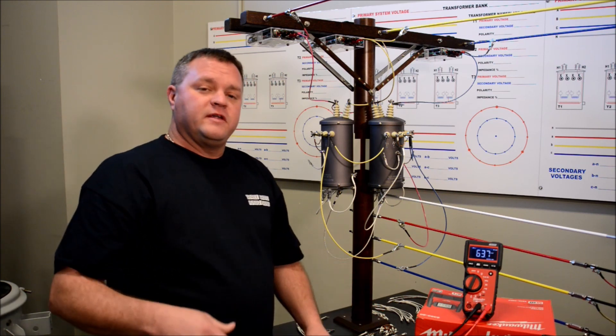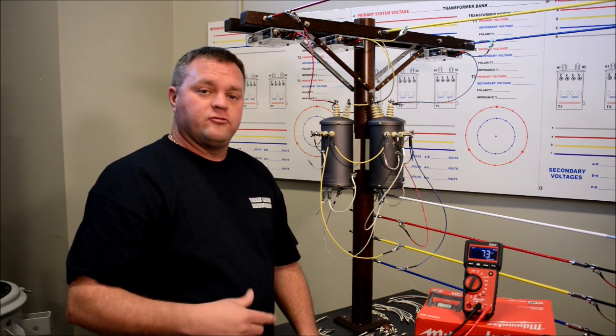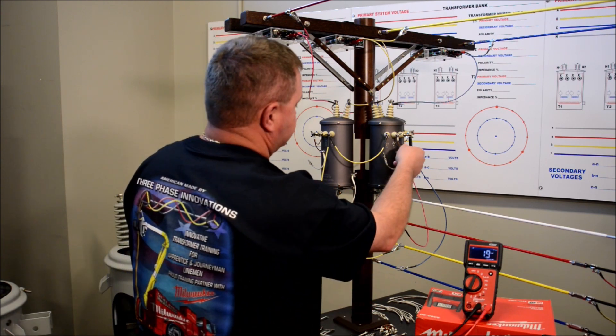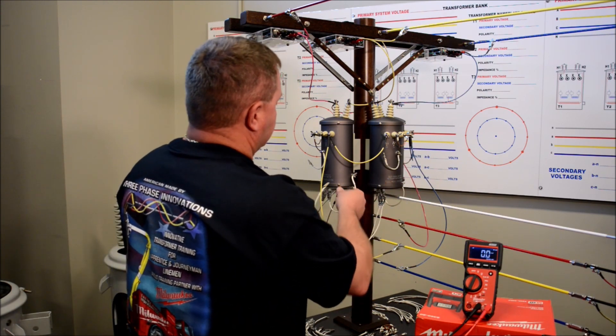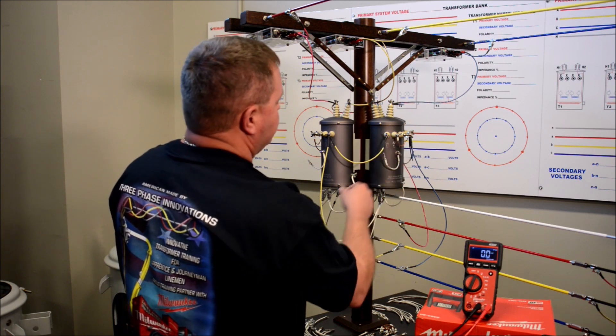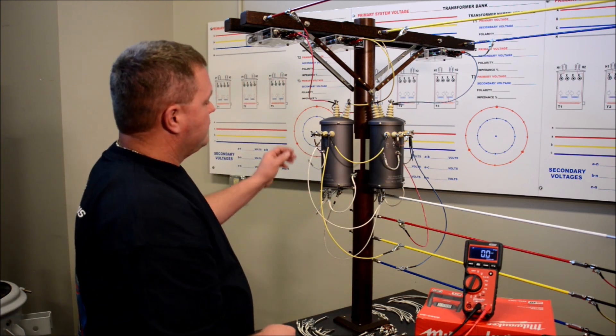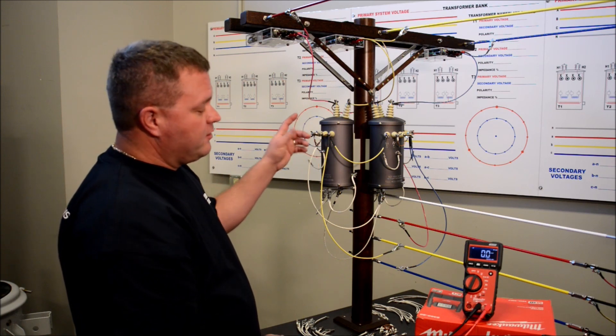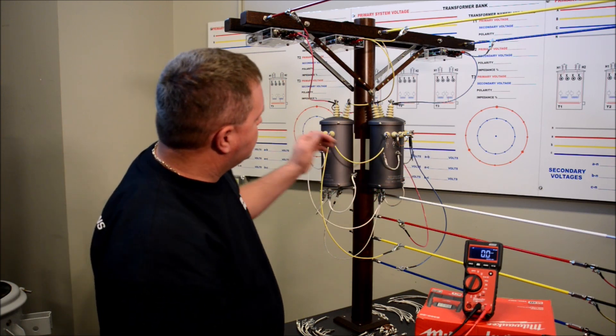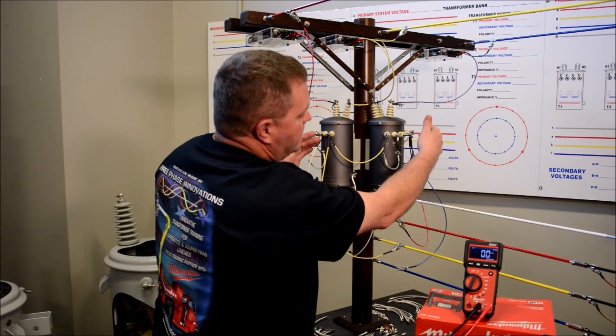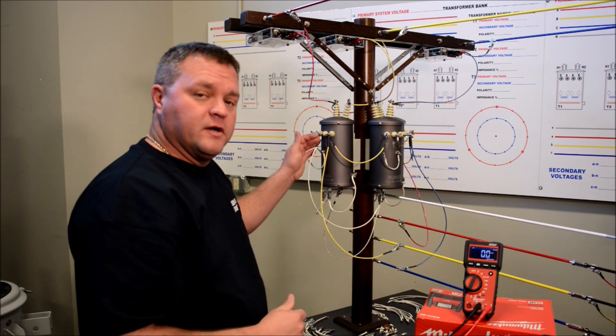But right now we're going to de-energize it, move the ground and show you how that high leg can be easily shifted. Right now we're taking it from B to C. We're going to take it over here between A and B. So A and B to ground we're going to be 120. C, because we're traveling three coils away, it's going to put us at 208.